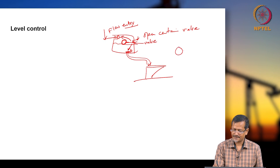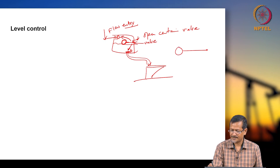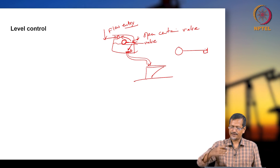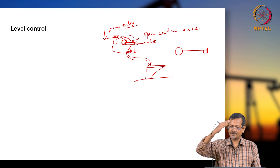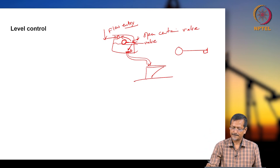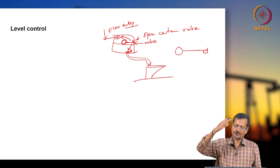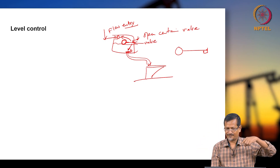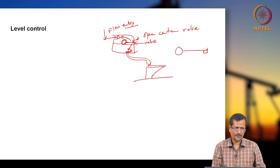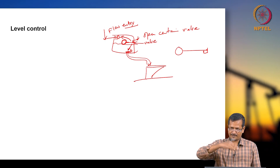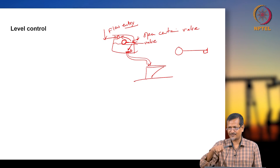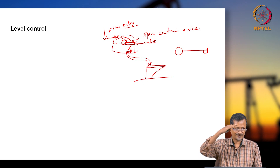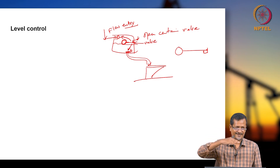How is it working? When the float is moving up after a certain level and reaches the top level, it will be closing the inlet flow. That flow entry will be closed. But when the float is at the bottom or nearby the bottom, it will be opening the inlet flow. So it is controlling inlet flow — when to close, when to open.